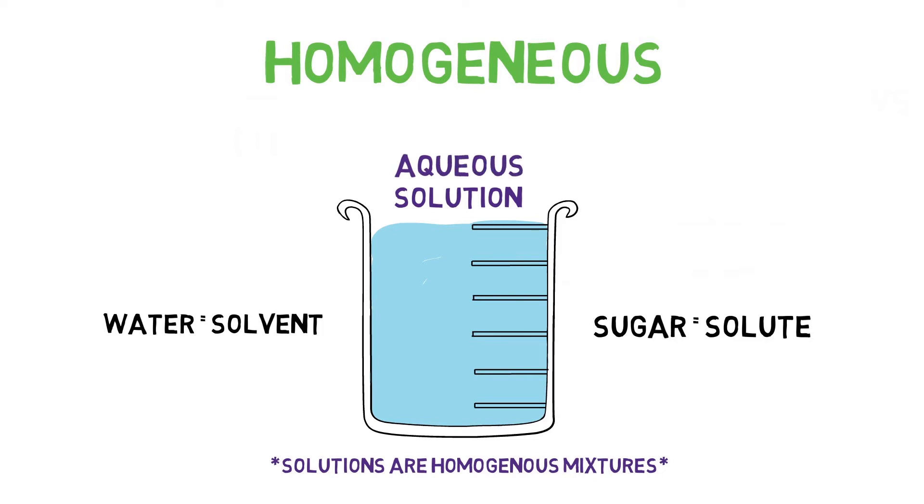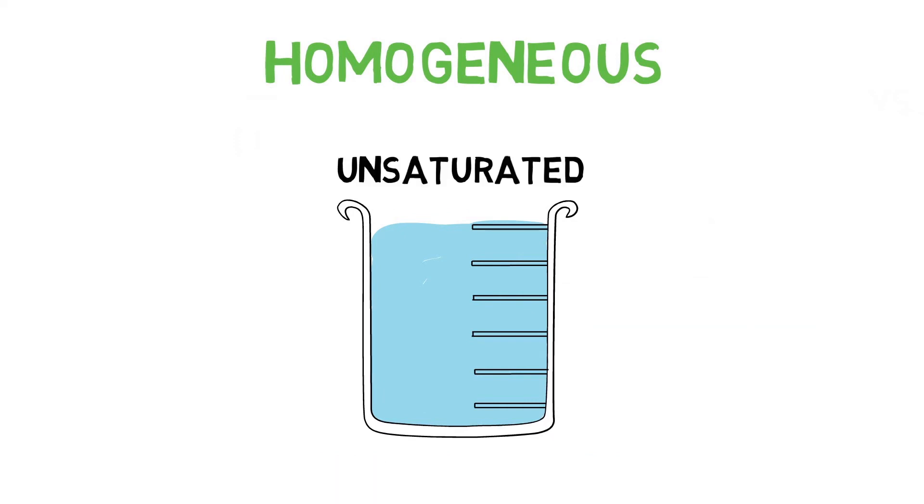Now with any solution, it can be described as saturated or unsaturated, and these terms refer to how much of the solute is dissolved, or the concentration of the solution. Solubility is the amount of solute that can dissolve in the substance. So when a solution has the ability to dissolve more solute, it is considered unsaturated, because the solubility has not been maxed out. When the concentration has maxed out the solubility, meaning no more solute can dissolve into the solution, it is considered saturated.